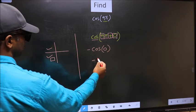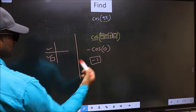So negative cos 0 is 1. This is our answer.